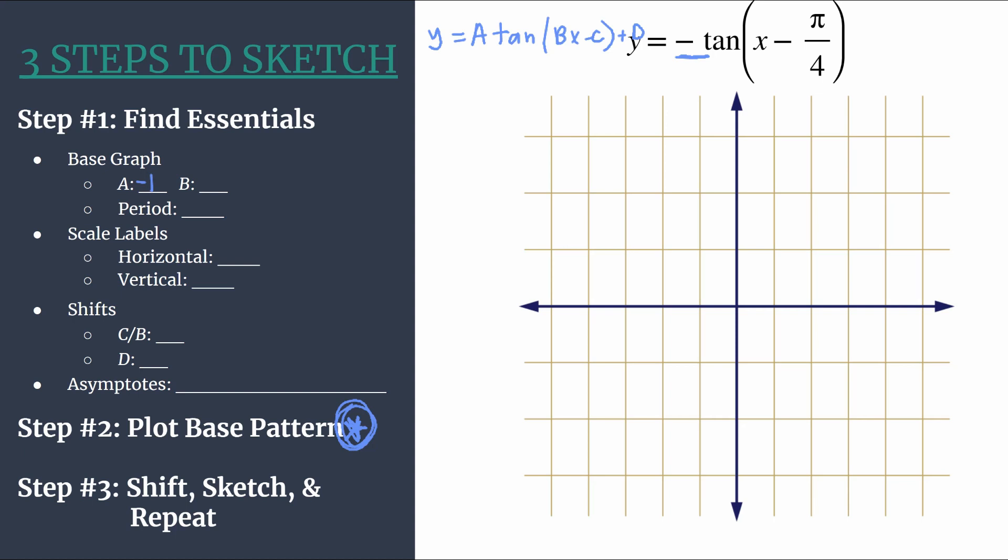Otherwise, a will just help us with our curve setting points. B is next. B is the coefficient in front of x. In this case, it's an understood one. That tells us there will be one cycle between zero and π. It also helps us calculate the period. For tangent, we do that calculating π over B. So π over one is just π. The period of this graph is π. That's just the length of one horizontal cycle.